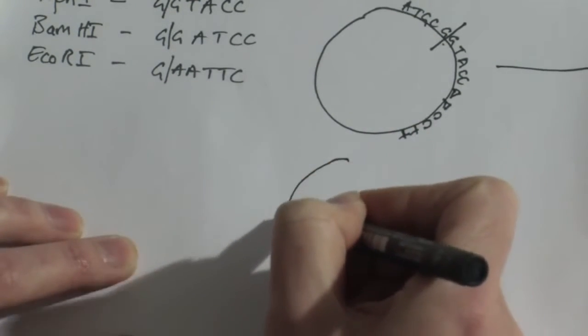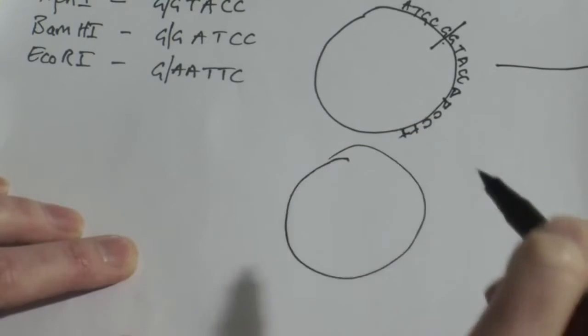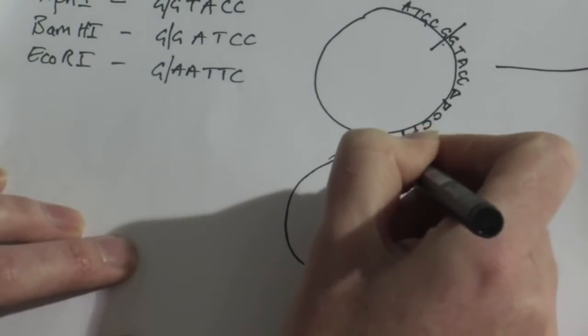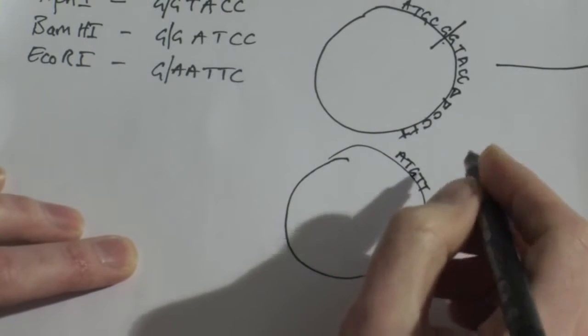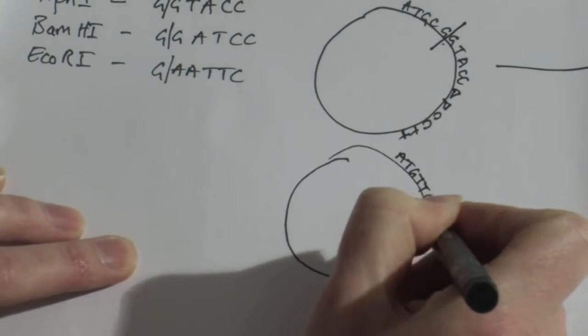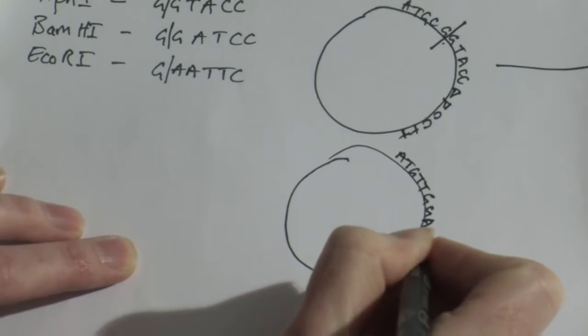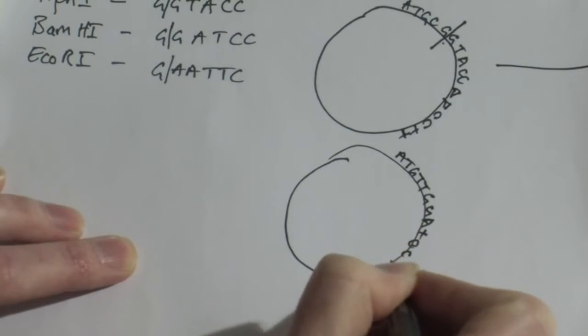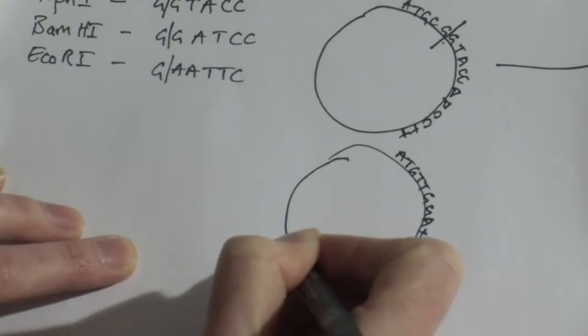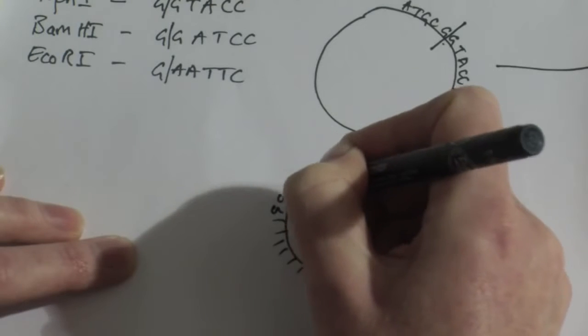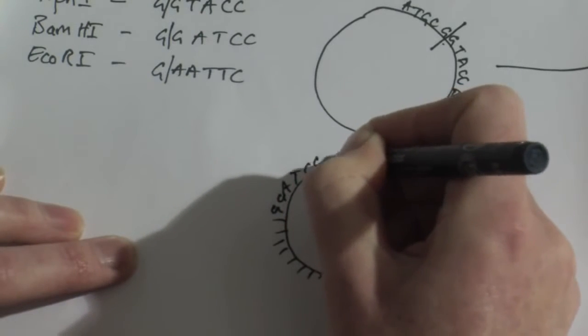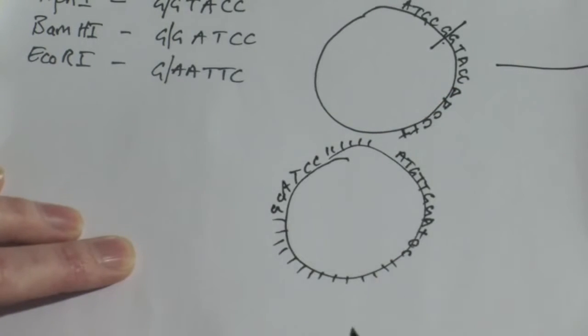Let's imagine another plasmid down here again with an unknown sequence of DNA running all the way around the plasmid. And in this example, I've got a BAM site, G G A T C C, nucleotides running all the way around here. And imagine that there was another BAM site, G G A T C C here, nucleotides all the way.